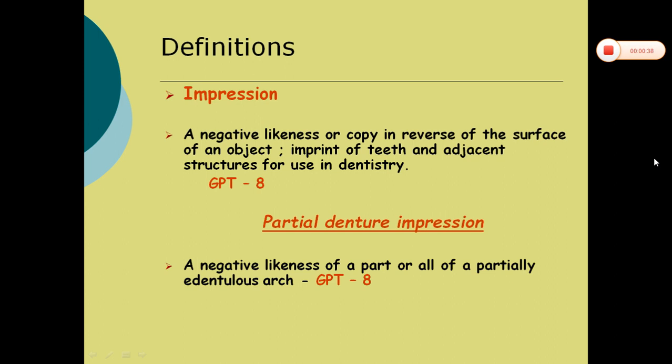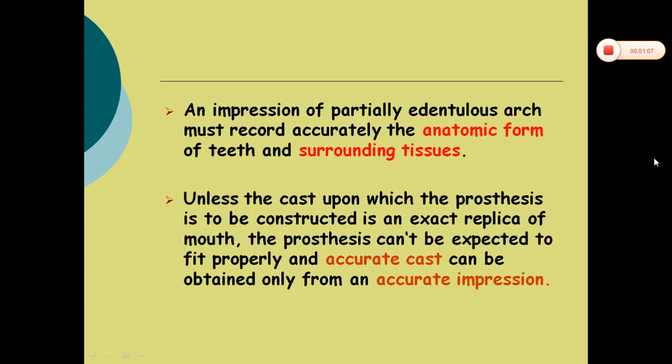Definitions. Impression is a negative likeness or copy in reverse of the surface of an object. Partial denture impression: a negative likeness of a part or all of a partially edentulous arch. An impression of a partially edentulous arch must record accurately the anatomic form of the teeth and surrounding tissues. Unless the cast upon which the prosthesis is to be constructed is an exact replica of the mouth, the prosthesis can't be expected to fit properly, and an accurate cast can be obtained only from an accurate impression.